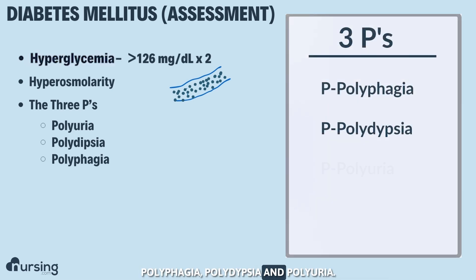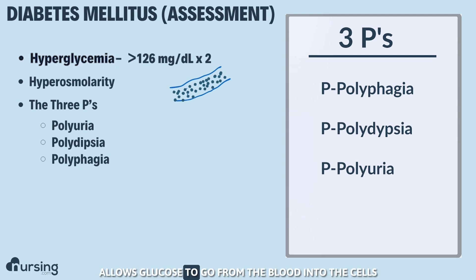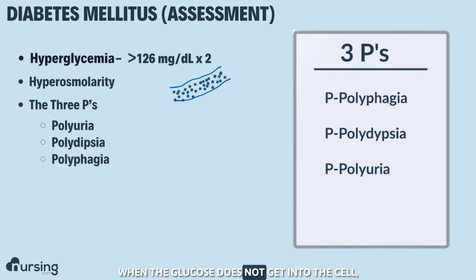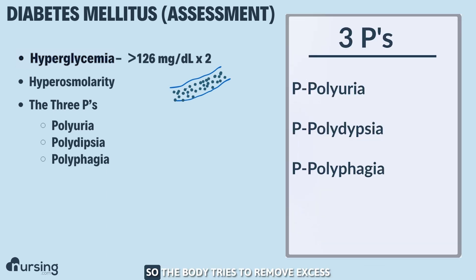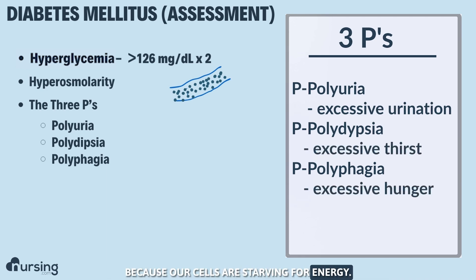The three P's are polyphagia, polydipsia, and polyuria. In type 1 diabetes, a patient does not produce insulin, and insulin allows glucose to go from the blood into the cells where it's utilized for energy. When the glucose does not get into the cell, it stays in the blood and that level rises. The body tries to remove excess glucose by producing extra urine, requires more water, and we get hungry because our cells are starving for energy.